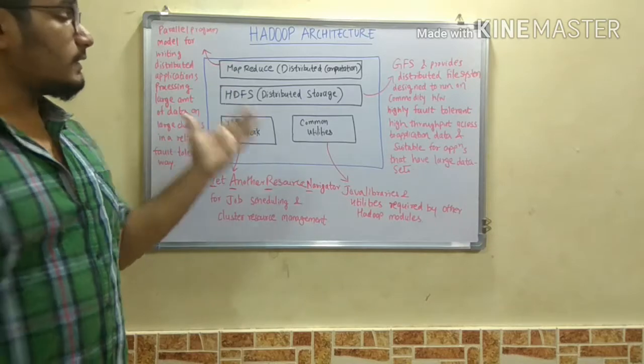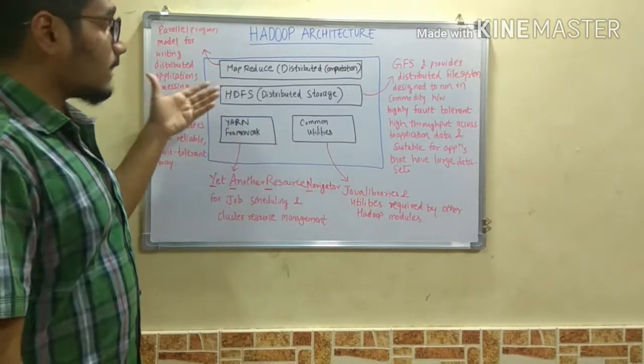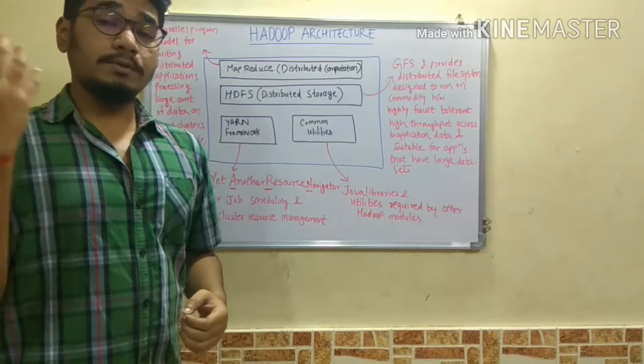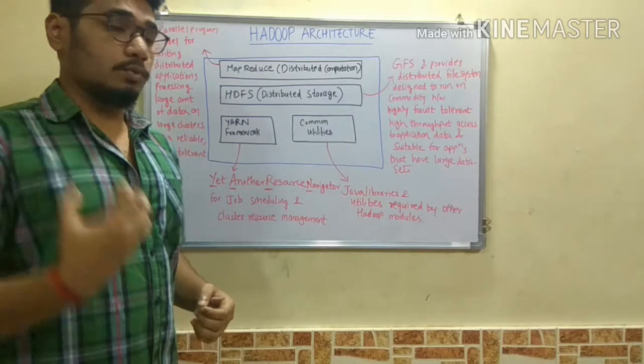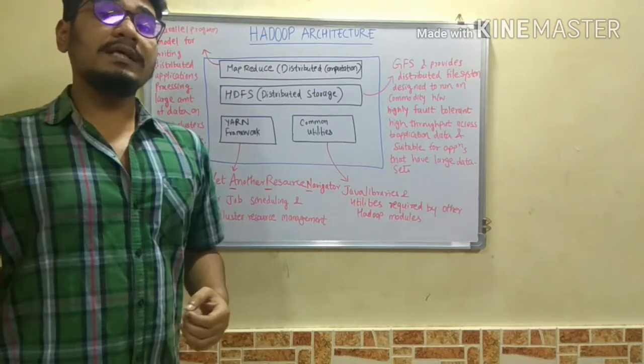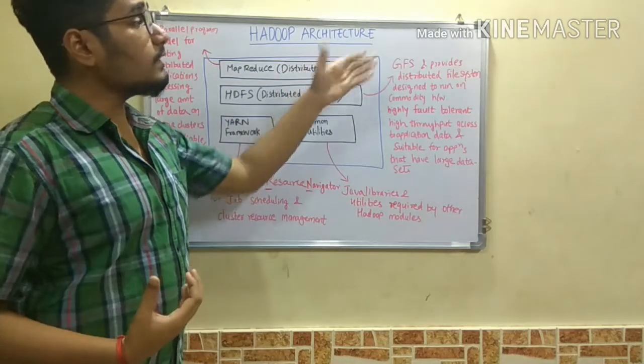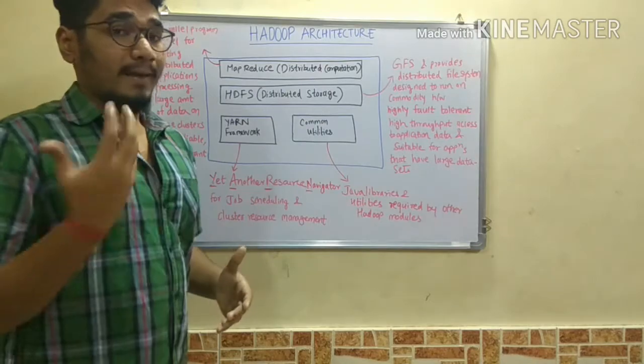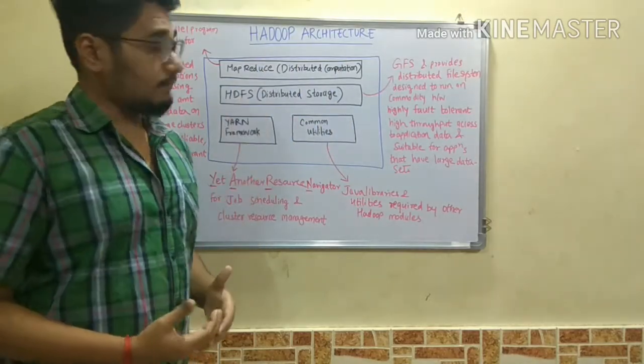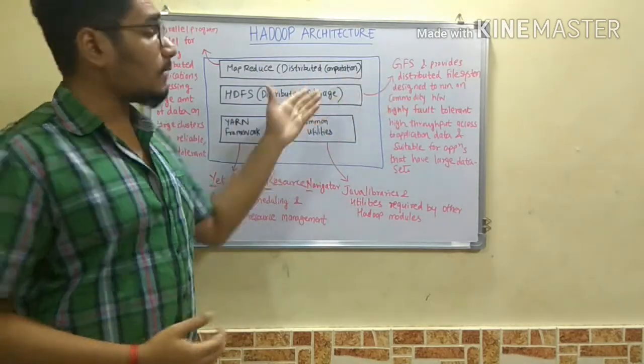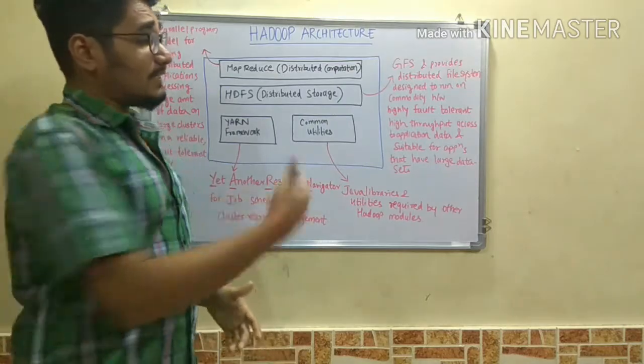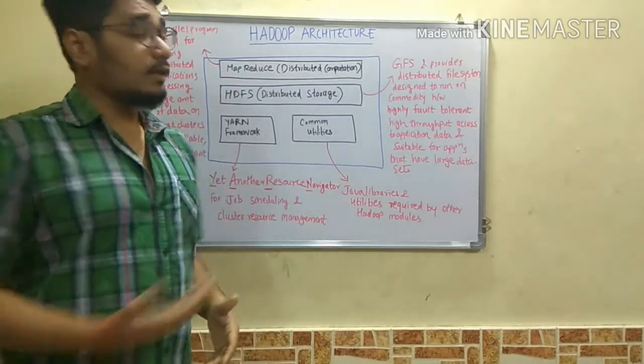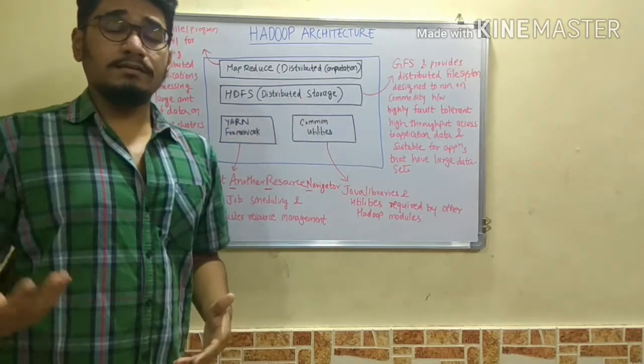Next, we talk about distributed storage, that is HDFS. Since HDFS is used for distributed storage, we use GFS, that is Google File System, for handling the data. It provides a massive distributed file system designed to run on commodity hardware. Now let's understand what is commodity hardware. Commodity hardware is seen everywhere, like...